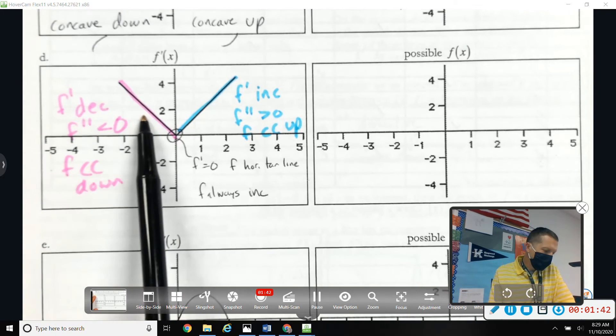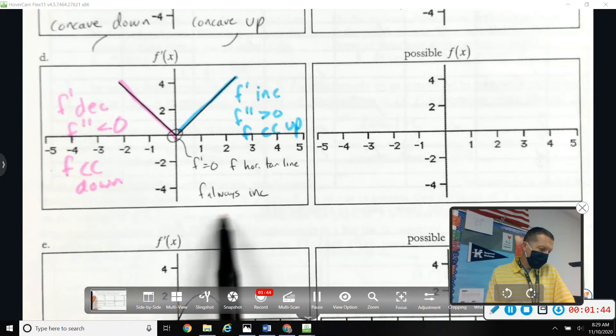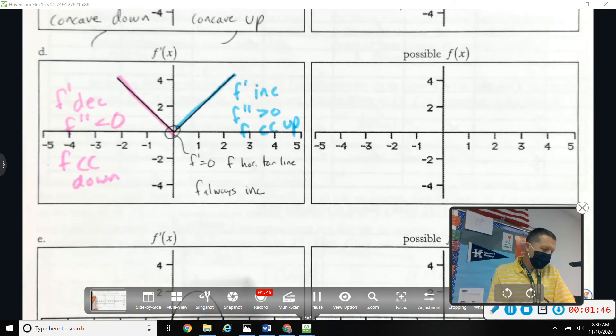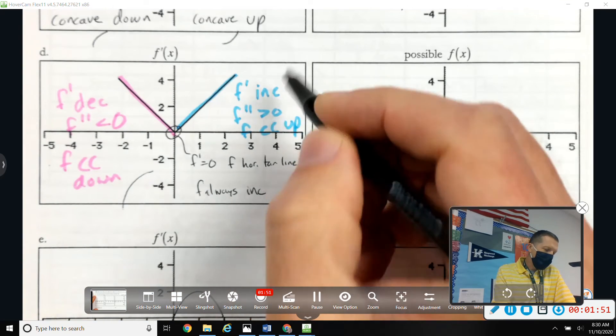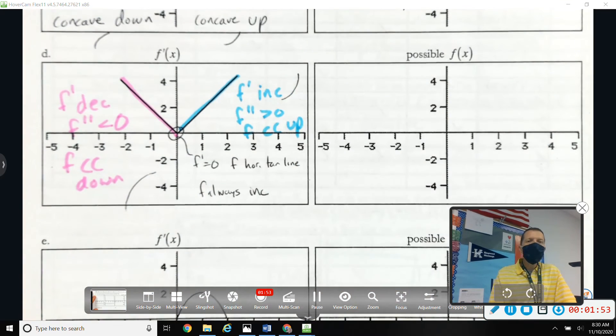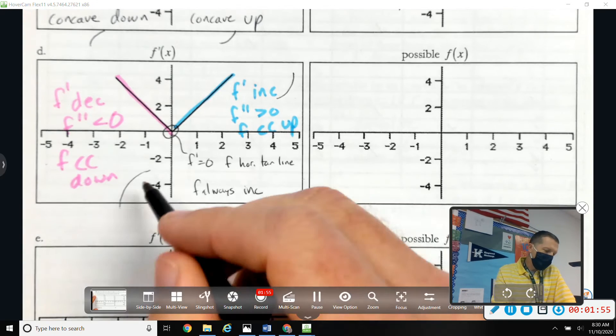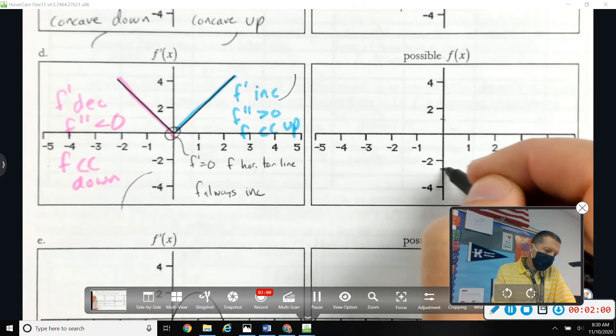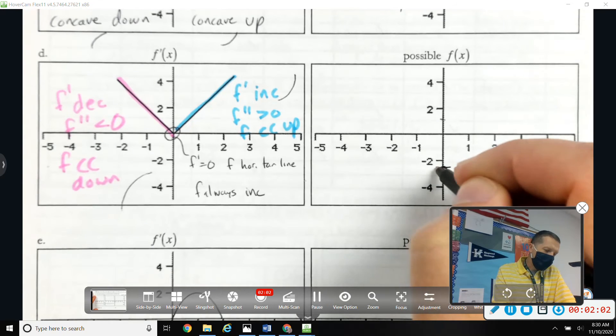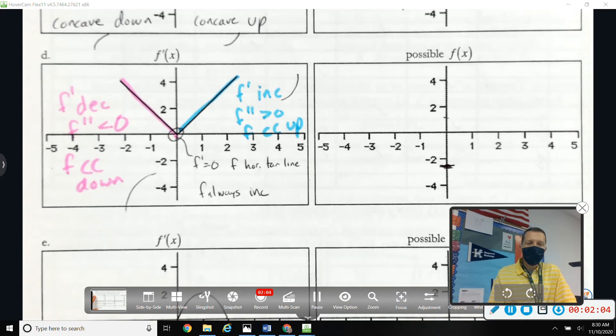So on this side, I need to be increasing, because it's always increasing, but concave down. On the other side, I need to be increasing, but concave up. And it's got to be flat there in the middle. So wherever we pick to cross the y-axis, it needs to flatten out right there.